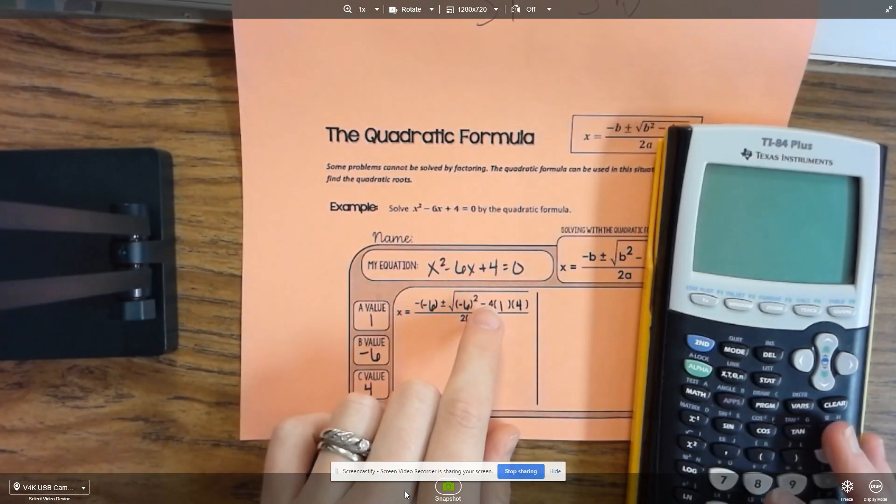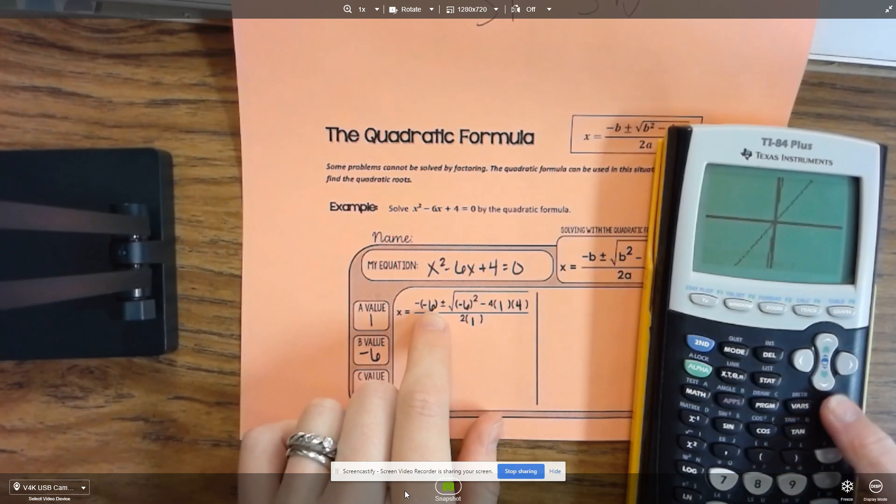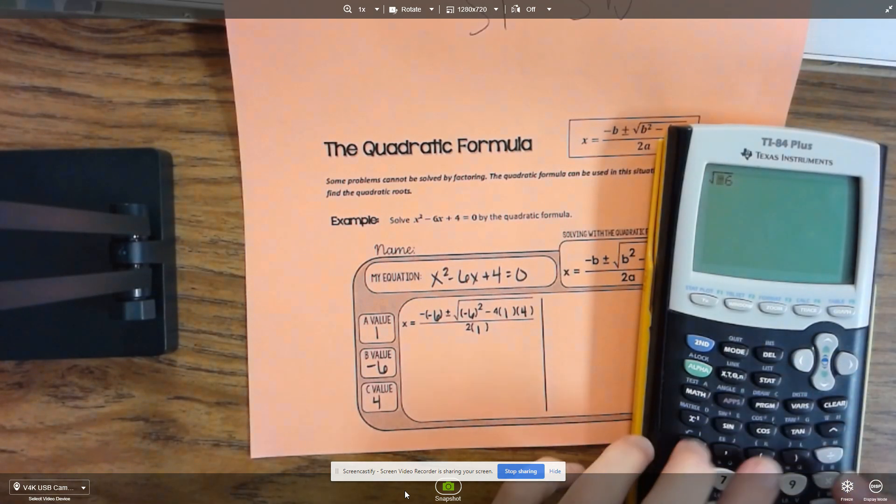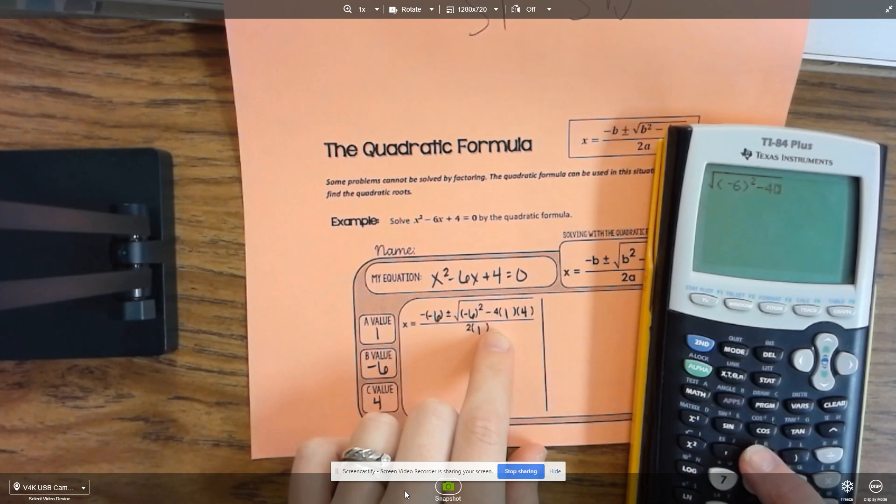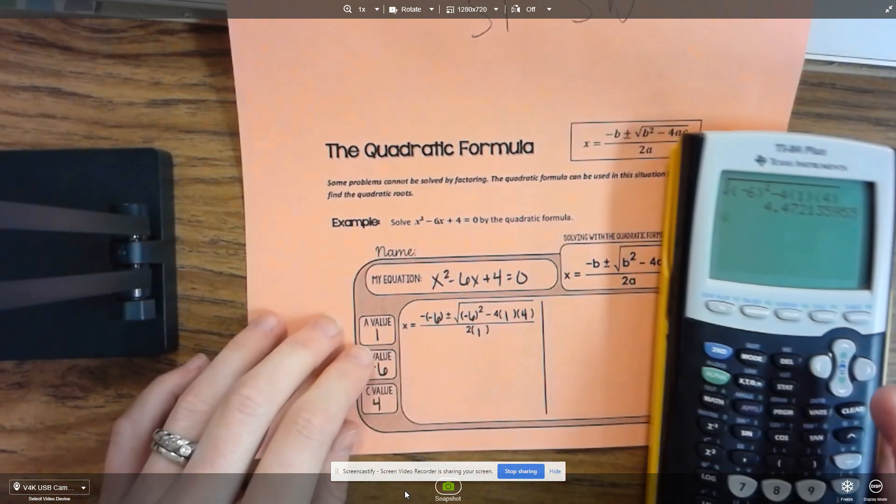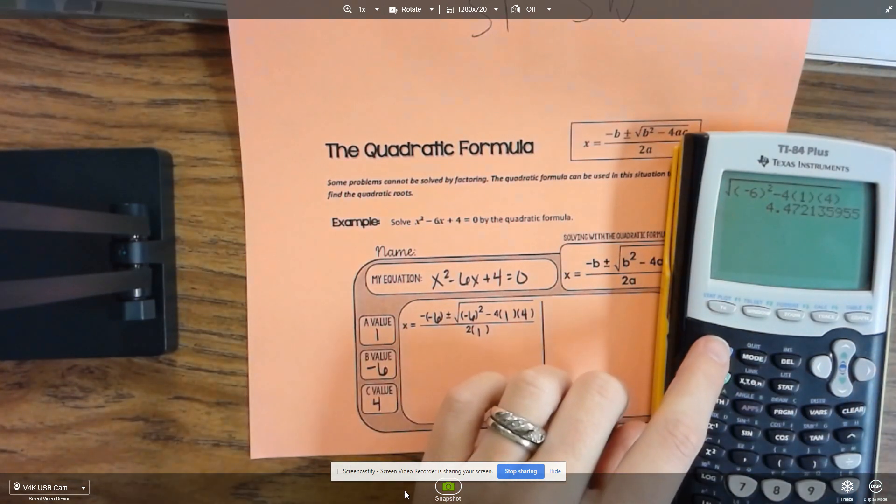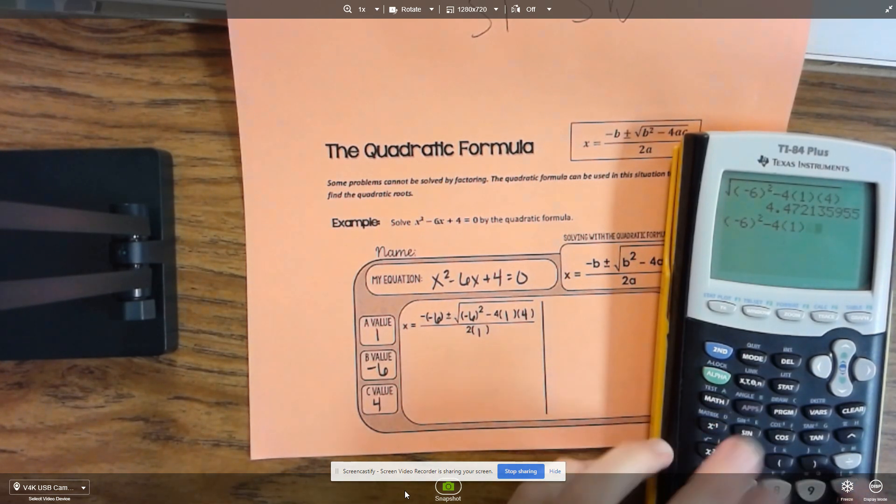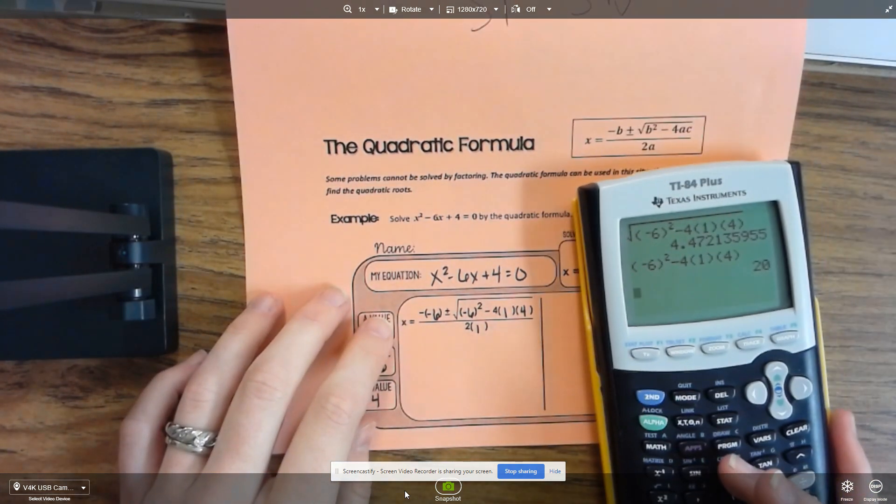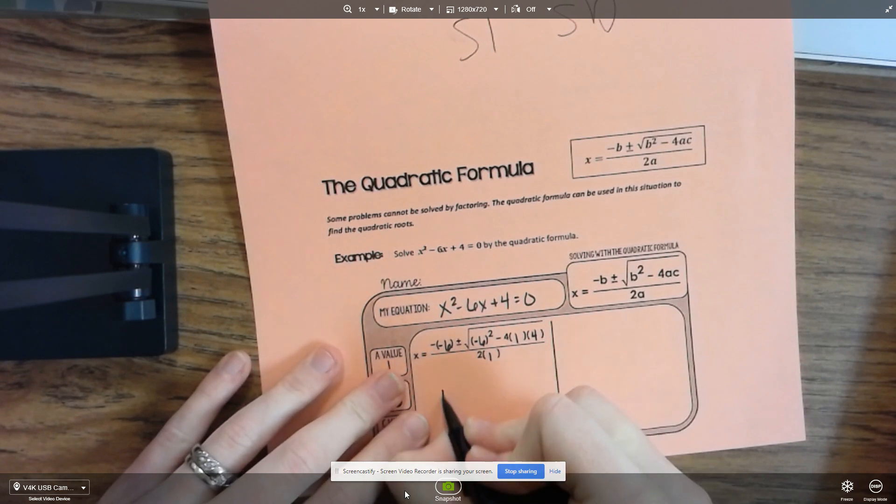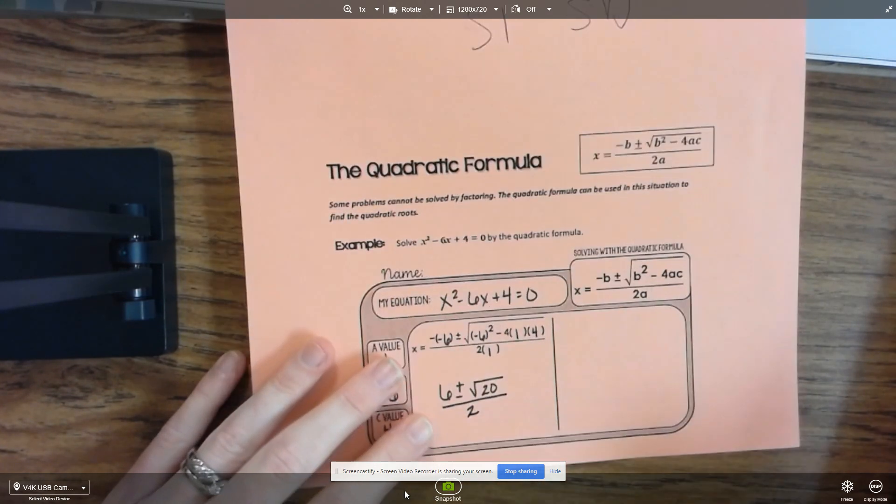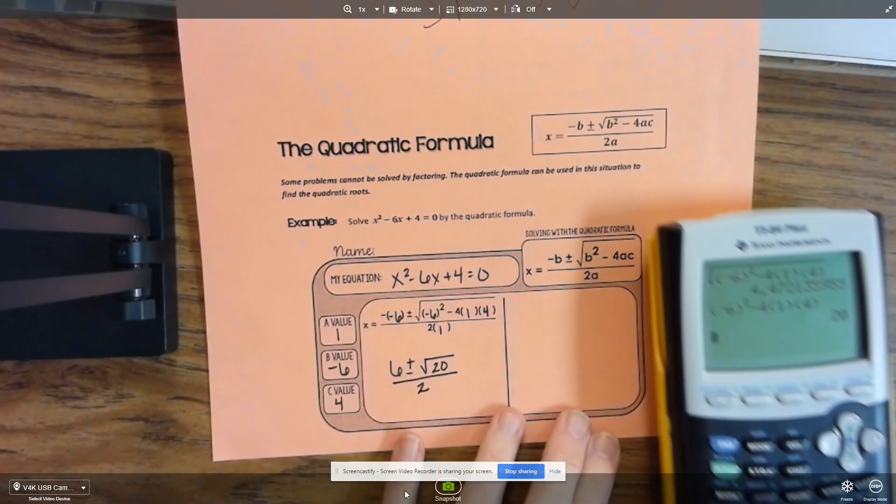I have always done what's underneath the radical first. So negative 6 squared minus 4 times 1 times 4. That would give me a positive 6 plus or minus the square root of 20 divided by 2, and you can simplify it down from there.